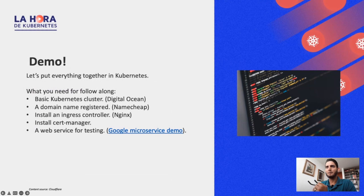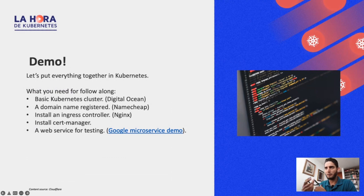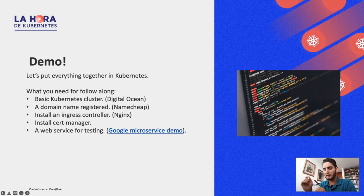Let's do it now: kubectl apply -f version three. Now we have an ingress. If we go and kubectl get ingress — we got an ingress there, called demo. With this ingress called demo, we can go ahead and check the website now responding using TLS.